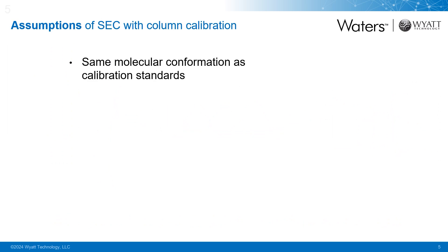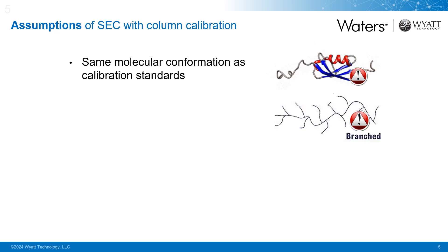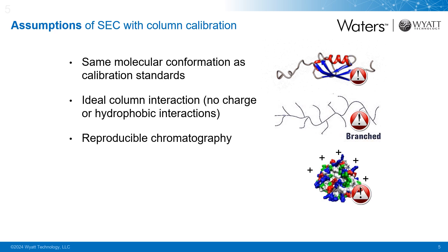SEC alone requires some assumptions to determine your molar mass. One has to assume that our sample has the same conformation as the column calibration standards, and therefore will have the same relationship between size and molecular weight. For example, when you calibrate using a globular protein, we're assuming that our sample is also an unmodified globular protein. When we calibrate with a linear polymer, we're also assuming that our polymer has no branching of any kind. And since SEC elution is based on hydrodynamic volume and not molecular weight, if our molecule has a different conformation than those standards, it will have a different relationship between molar mass and size compared to the column calibration curve, leading to incorrect conclusions about your sample's molar mass.